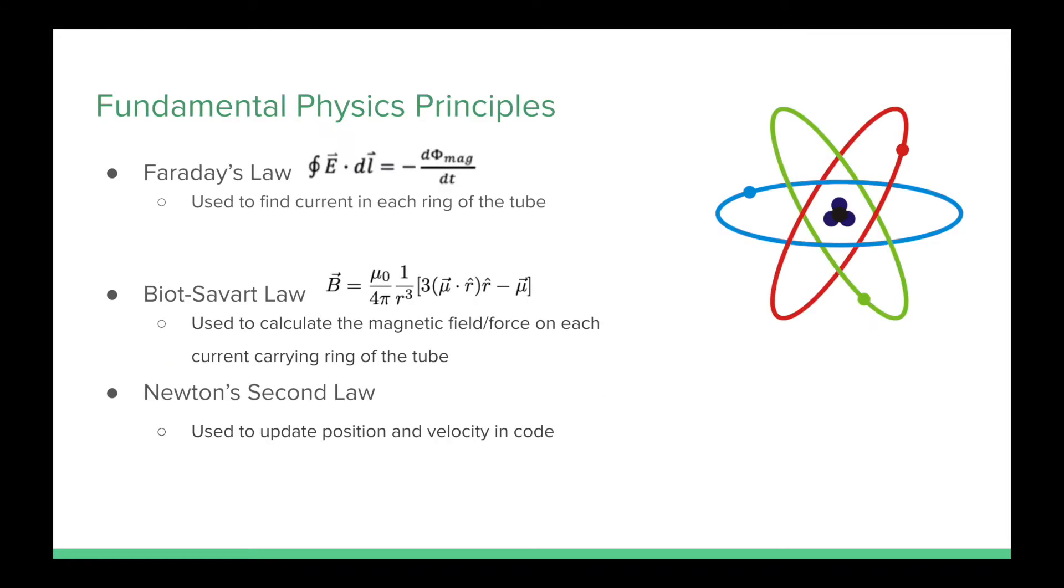The main physics principles used in Lab 5 include Faraday's law, which will be used to find the induced current in each ring of the aluminum tube, the Biot-Savart law, which is used to calculate the magnetic field on each current-carrying ring, as well as Newton's second law, which is used to update the position and velocity of the magnet in the code.